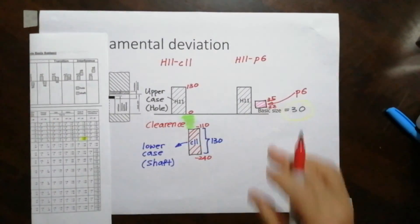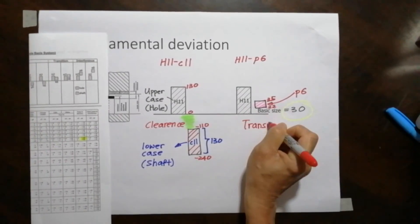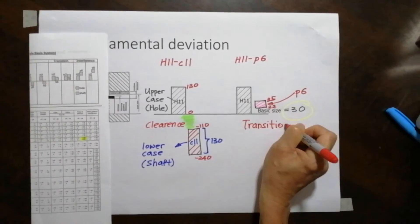This one is in between. So in between, there's a combination. There's sometimes gap, sometimes interference. So this one is called transition fit.